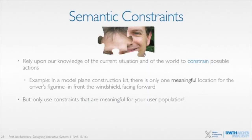Semantic constraints are different: even if things fit physically, they may not make sense. So while it's physically possible, it doesn't make semantic sense. That's what a semantic constraint basically tells you — the action is possible physically, but meaning tells you it's wrong.